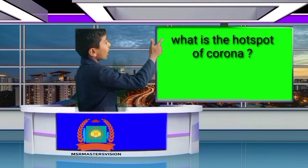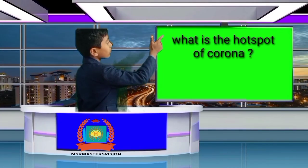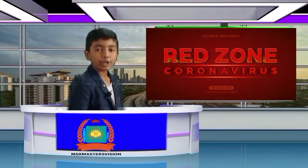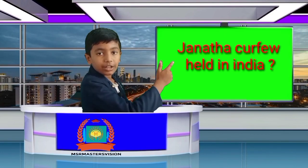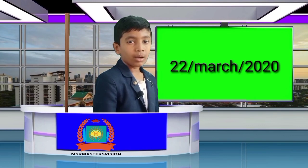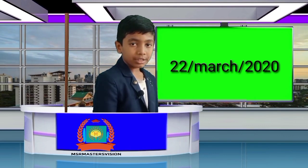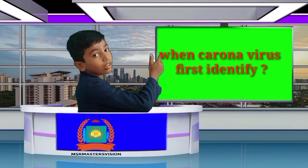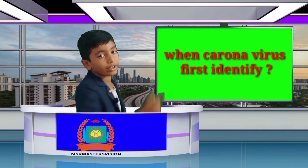What is the first case of Corona? Answer is Red Joe. When was the Corona virus first found in India? Answer is 22 March 2020. When was Corona virus first identified? Answer is 1960.